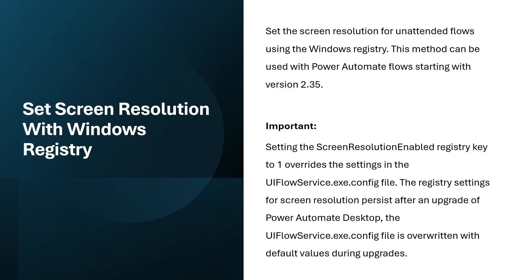For example, if you have set up some settings in the UIFlow service.exe.config file, and you then modify the value in the Windows Registry, it will overwrite the settings in the config file. The registry settings for screen resolution persist after an upgrade of Power Automate Desktop. However, the UIFlow service.exe.config file is overwritten with default values during upgrades — so any settings you had applied there will be removed and reset to default after an update. You would need to go back to the config file and change the values again as per your bot's requirements.